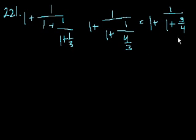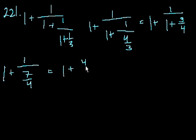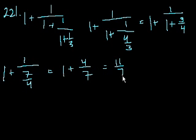What's 1 plus 3 fourths? That's 4 fourths plus 3 fourths, so that's 7 fourths. So then that becomes 1 plus 1 over 7 fourths, which is equal to 1 plus 4 over 7. And that equals 7 over 7 plus 4 over 7, which is equal to 11 over 7. And that's choice D.